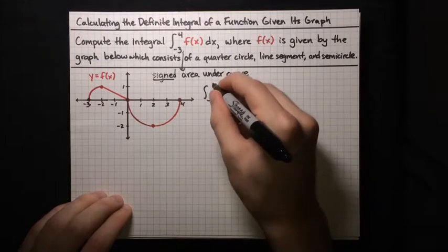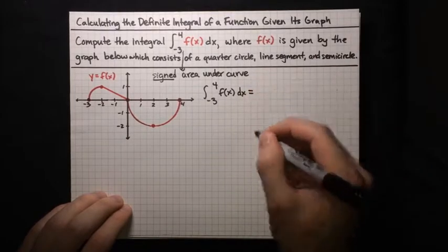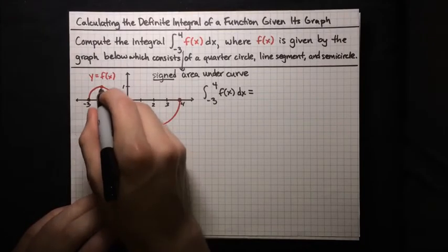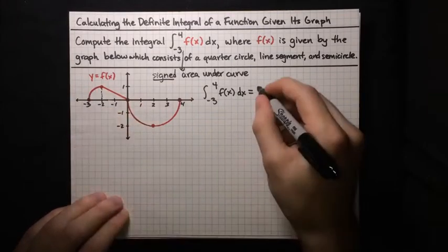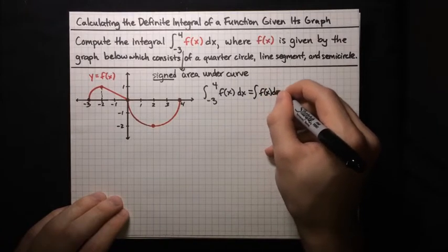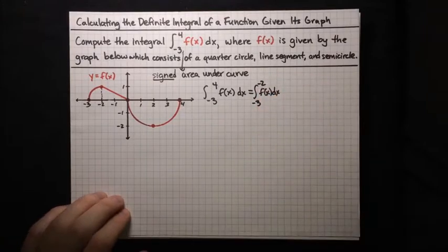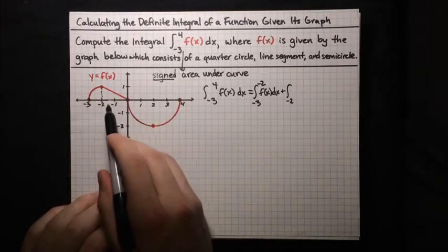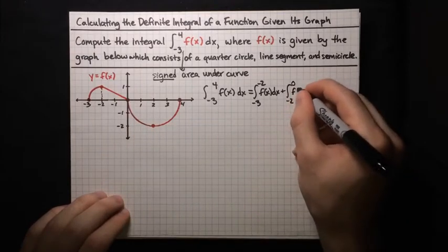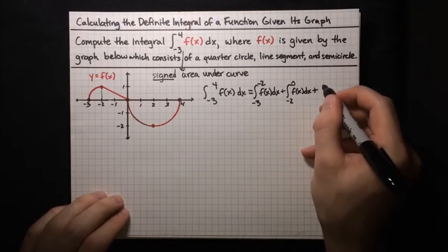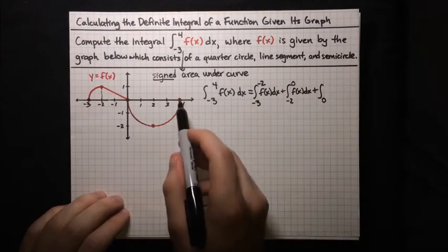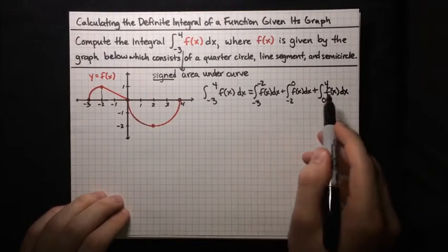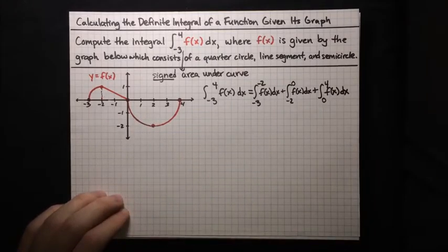With that in mind, let's break up the integral from negative 3 to 4 of f(x) dx into easier integrals that correspond to shapes. First, from negative 3 to negative 2, that's the quarter circle. Then from negative 2 to 0, that corresponds to the triangle. And then from 0 to 4, because that's the semicircle. So we've broken this integral into three different integrals, each corresponding to a geometric area in the graph.